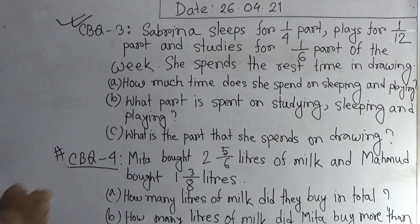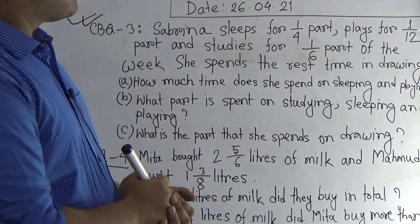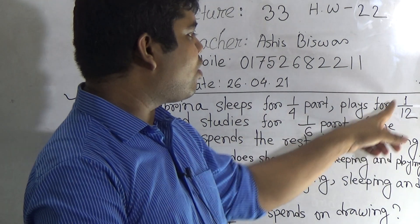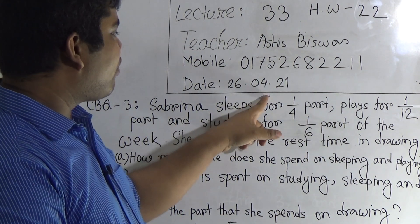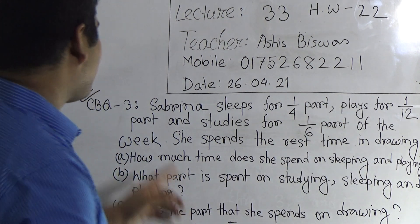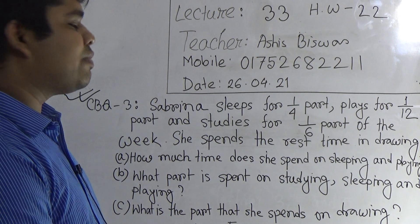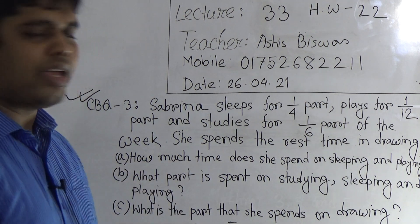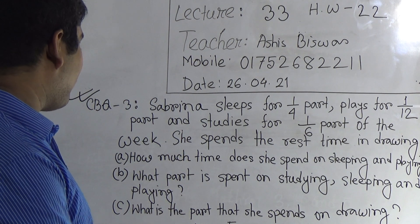My dear student, let us read the question. Sabrina sleeps for 1/4 part, plays for 1/12 part, and studies for 1/6 part of the week. She spends the rest of the time on drawing. Question A: how much time does she spend on sleeping and playing? Question B: what part is spent on studying, sleeping and playing? Question C: what is the part she spends on drawing?